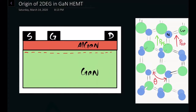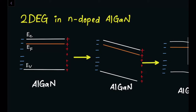Let's have a look at how the two-dimensional electron gas can be created by these polarization vectors when the AlGaN is n-type doped — meaning we have doped it so that there will be a bunch of electrons in the conduction band, for example with phosphorus or nitrogen. So let's look at the energy band diagram. We'll first analyze how the 2DEG is created in n-doped aluminum gallium nitride. There are three energy levels: the conduction band, the valence band, and the Fermi level. The Fermi level is very close to the conduction band because it is n-type doped, meaning there will be a bunch of electrons in the conduction band.